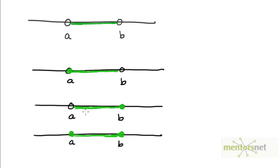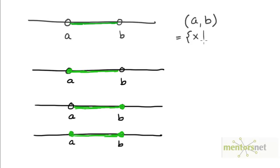Let's look at these four intervals from A to B. The difference between these four intervals is in whether they include or exclude the left or right endpoint. The first, the topmost interval over here excludes both A and B from it. So we denote it as A, B with round brackets on both sides. This is nothing but the set of all numbers which lie between A and B, excluding the two endpoints A and B.